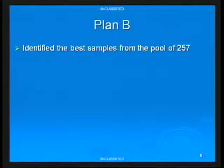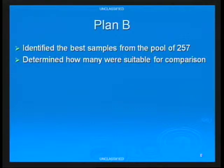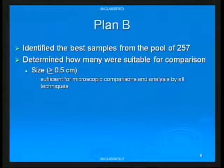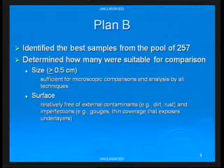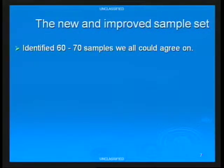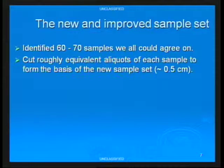But it quickly grew complicated at that stage — so, Plan B. We identified the best samples from that pool of 257 white paints and determined how many were suitable for comparison, meaning they had sufficient sample size for all the microscopic exams and analytical techniques. We also wanted a surface relatively free of external contaminants and imperfections. The new and improved sample set contained 60 to 70 samples. We roughly cut these down to about half a centimeter to provide a uniform sample size.